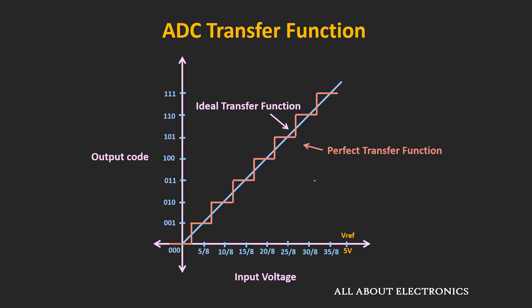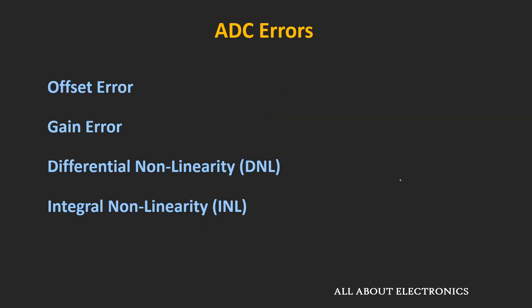This is the transfer function of the perfect ADC shifted left by 0.5LSB. So ideally, for a 3-bit perfect ADC, the transfer function should look like this. But due to errors in the ADC, the actual transfer function deviates from the perfect transfer function, and we will see that by understanding the offset error and the gain error.